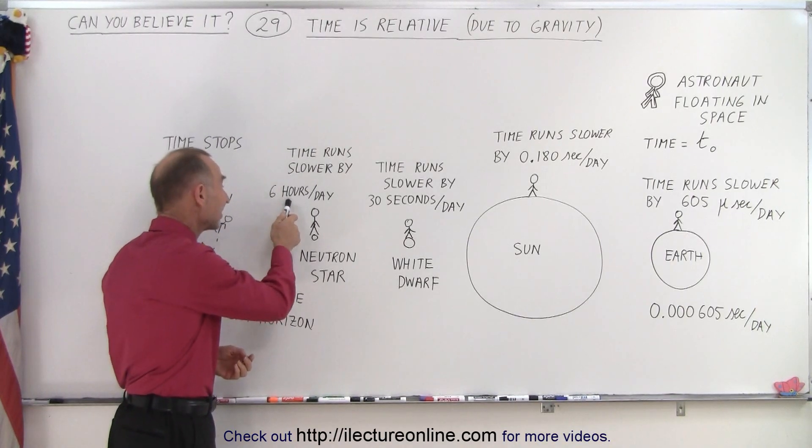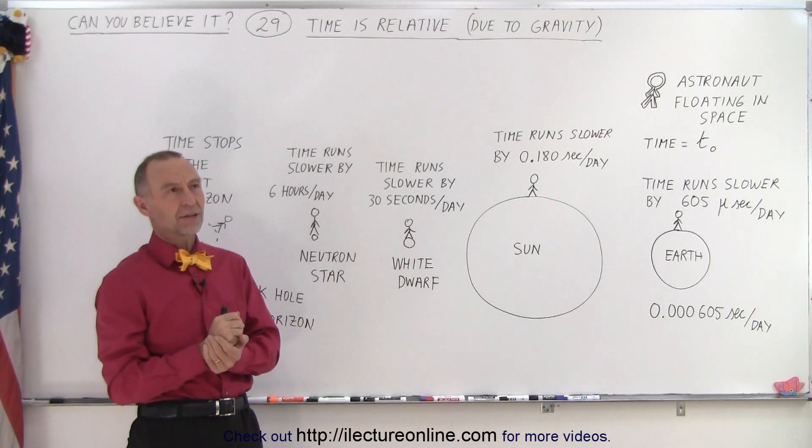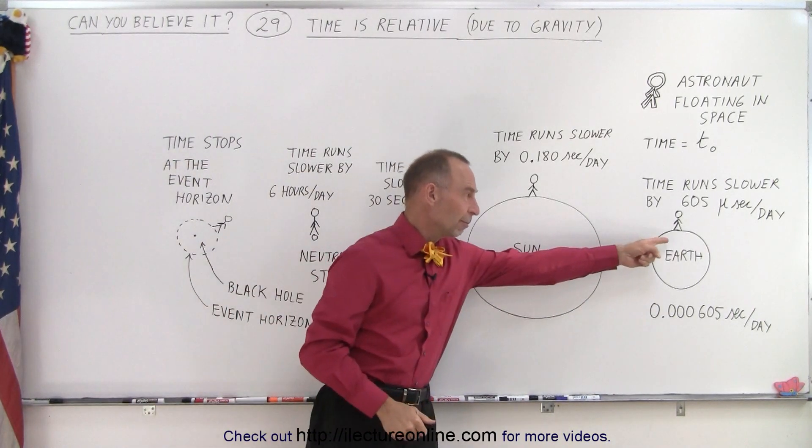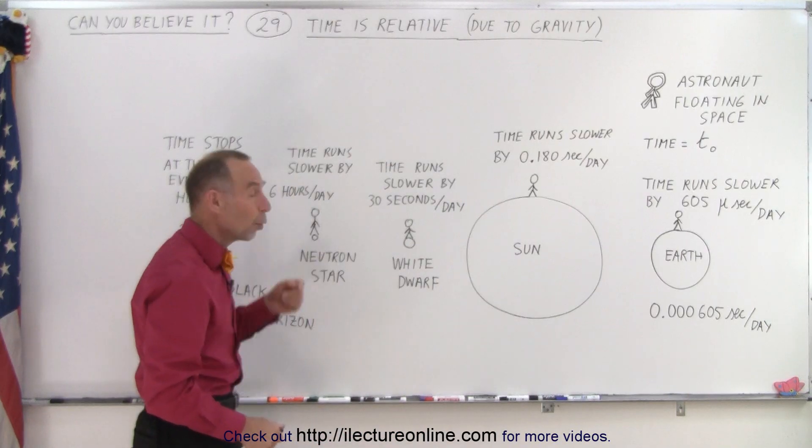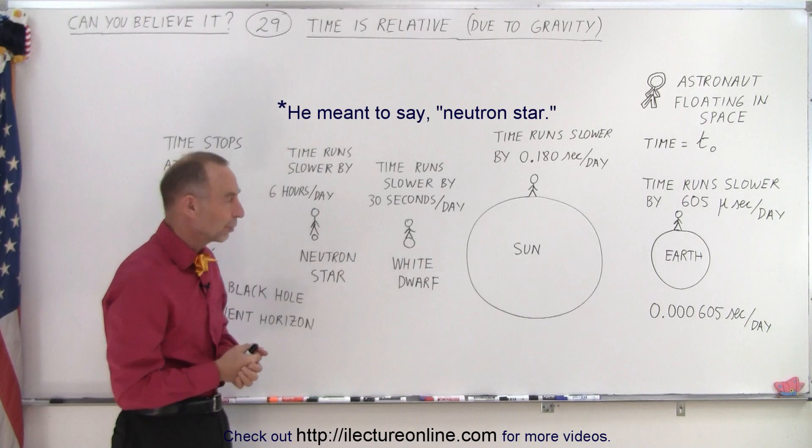If you were able to stand on the surface of that neutron star, time would slow down by 6 hours per day. So a day would take, well, let's see here, let's put that in perspective. When 24 hours pass by on the Earth's surface, at the same time, only 18 hours will have passed at the surface of a White Dwarf.